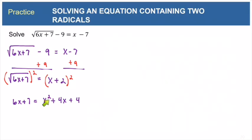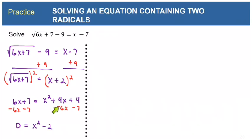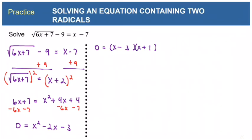We can see that the equation is quadratic, so we use the zero factor property — we need a zero on one side. Subtracting 6x and subtracting 7 from both sides gives zero equals x squared minus 2x minus 3. We factor this trinomial into two binomials: the signs need to be different for a negative last term and negative middle term. Putting the 3 with the minus sign and the 1 with the plus sign gives us (x minus 3)(x plus 1), and outer plus inner does add up to negative 2x. So either x minus 3 equals 0, giving x equals 3, or x plus 1 equals 0, giving x equals negative 1. These are just potential solutions — I must check them both.